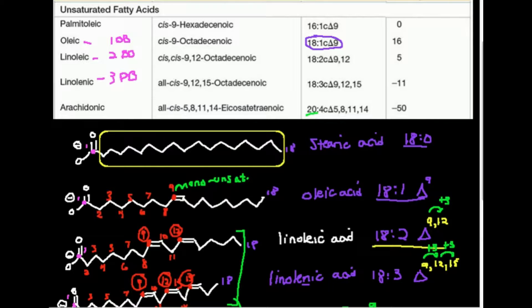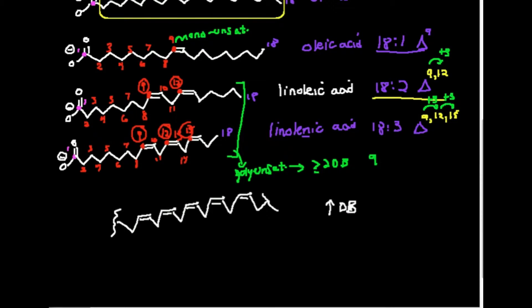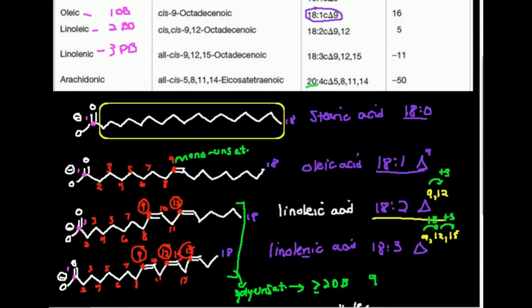Now arachidonic acid is not the same number of carbons. It's 20, but notice the melting point is way down at -50. So the general rule with unsaturated fatty acids that have the same number of carbon atoms is if you increase the number of double bonds for the same number of carbon atoms, that tends to decrease the melting point. And that's pretty much always true for any fatty acids we're going to be dealing with. Which means that saturated fatty acids tend to exist as solids, but if I talk about monounsaturated or polyunsaturated fatty acids, they tend to be liquid.